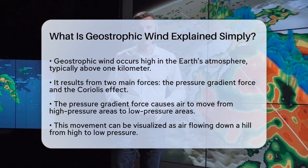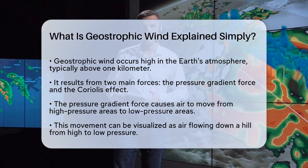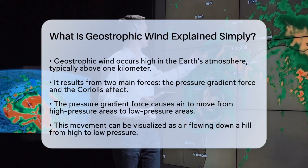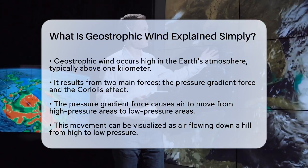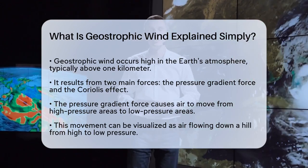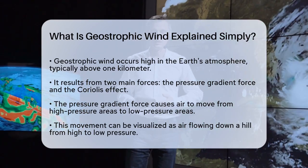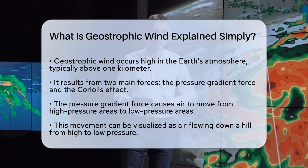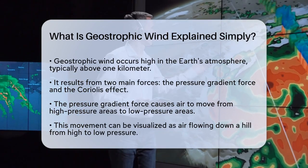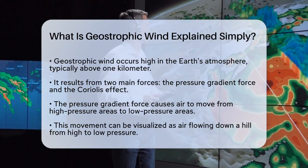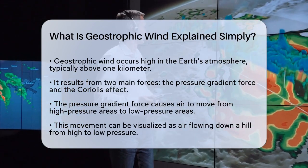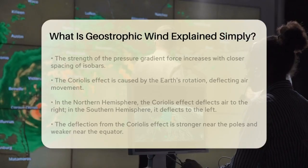Let's look at the pressure gradient force. This force arises because air moves from areas of high pressure to areas of low pressure. Imagine air as water flowing down a hill — it moves from the top, where the pressure is higher, to the bottom, where the pressure is lower.